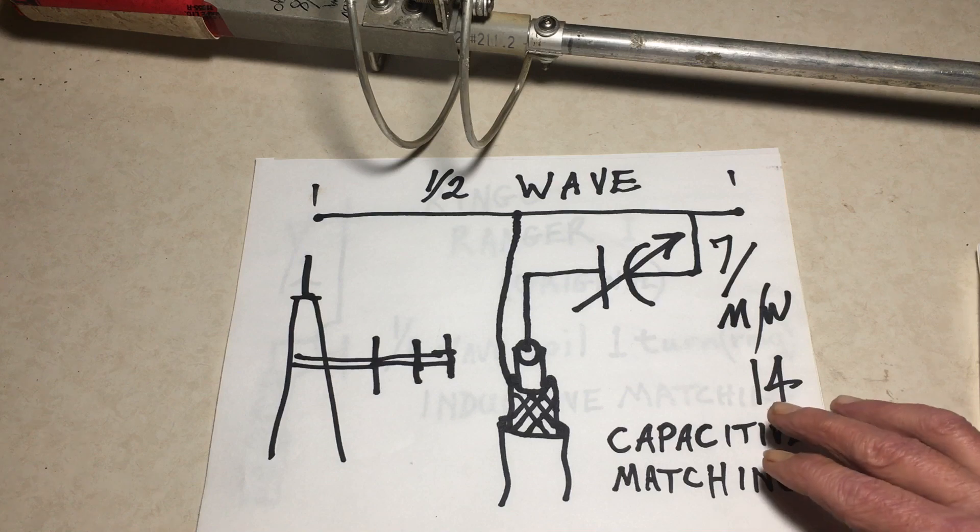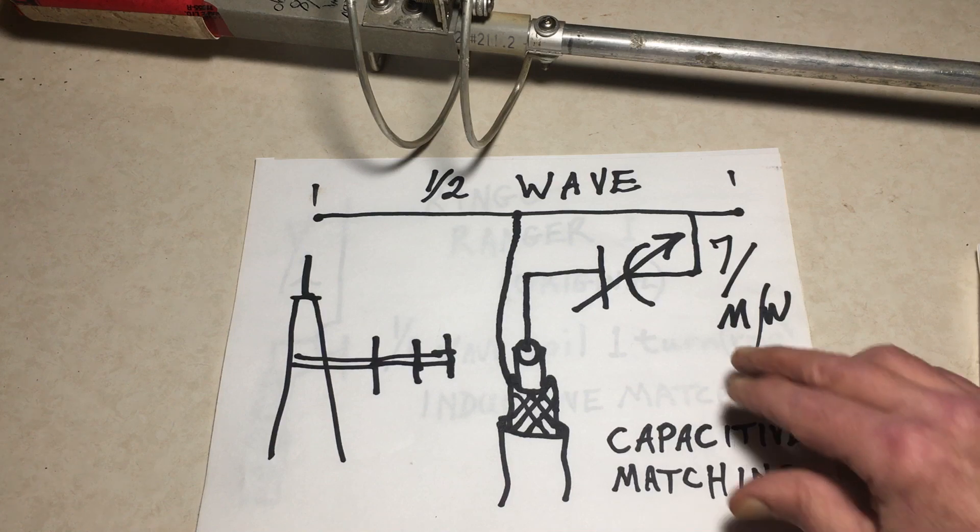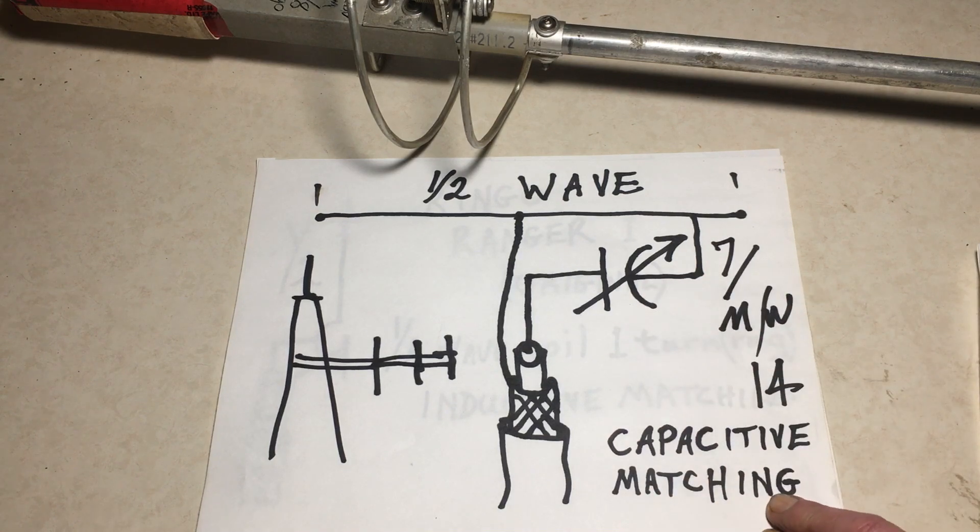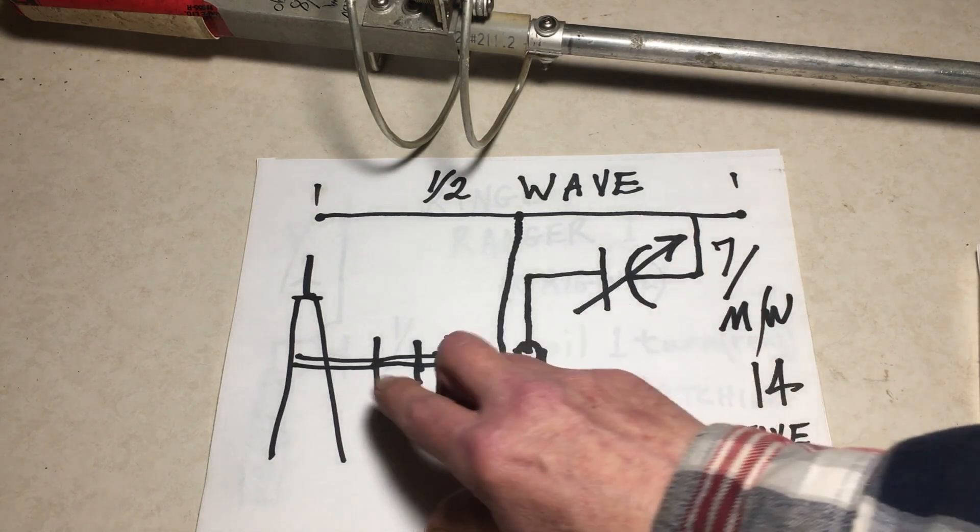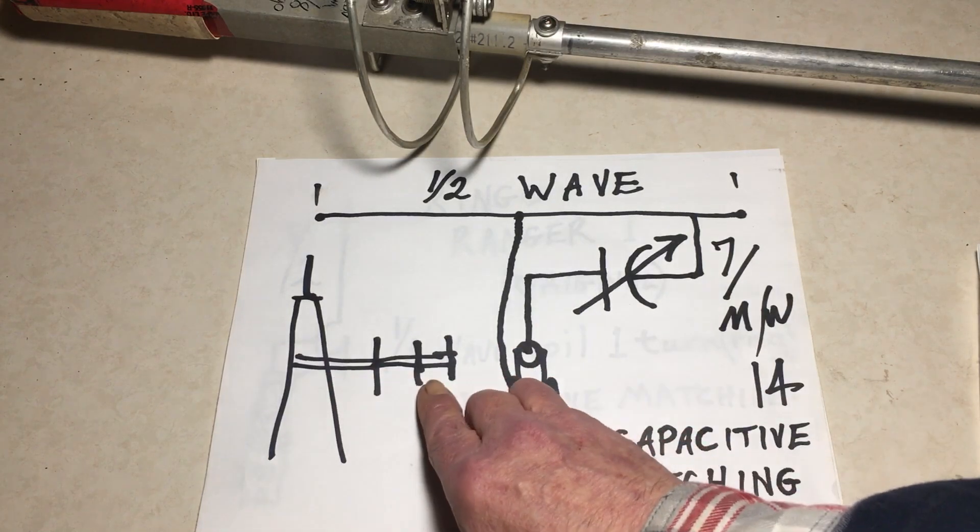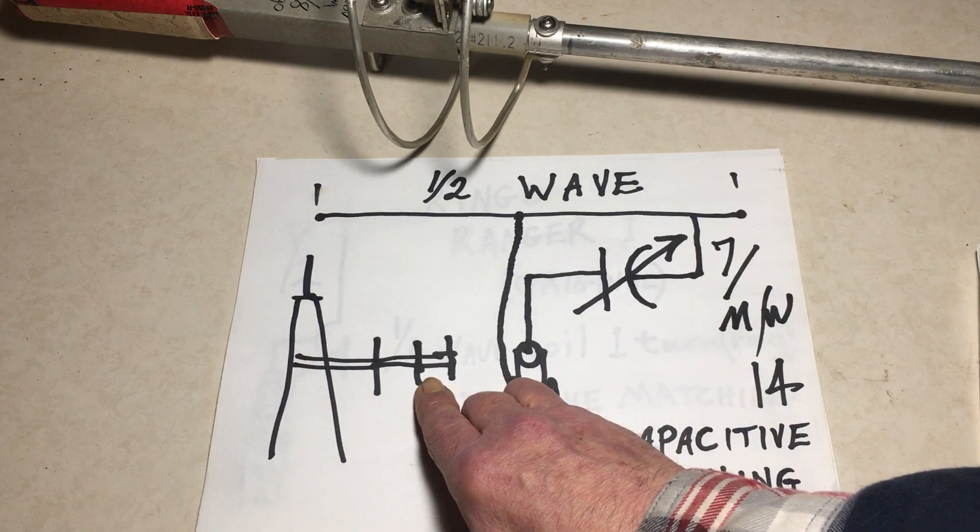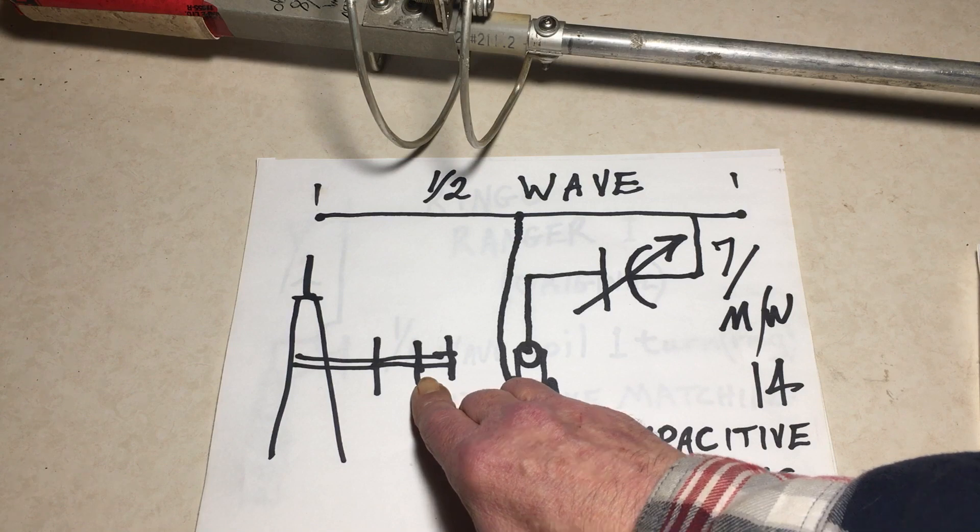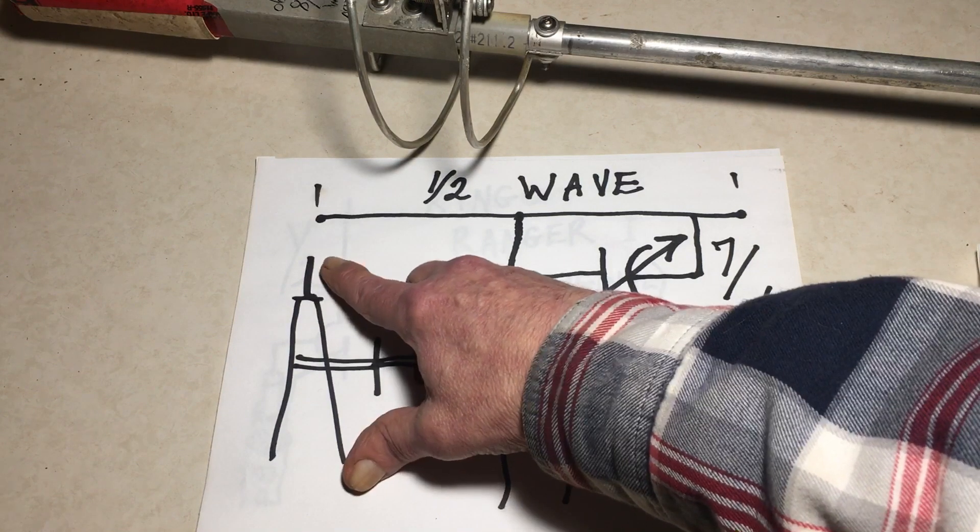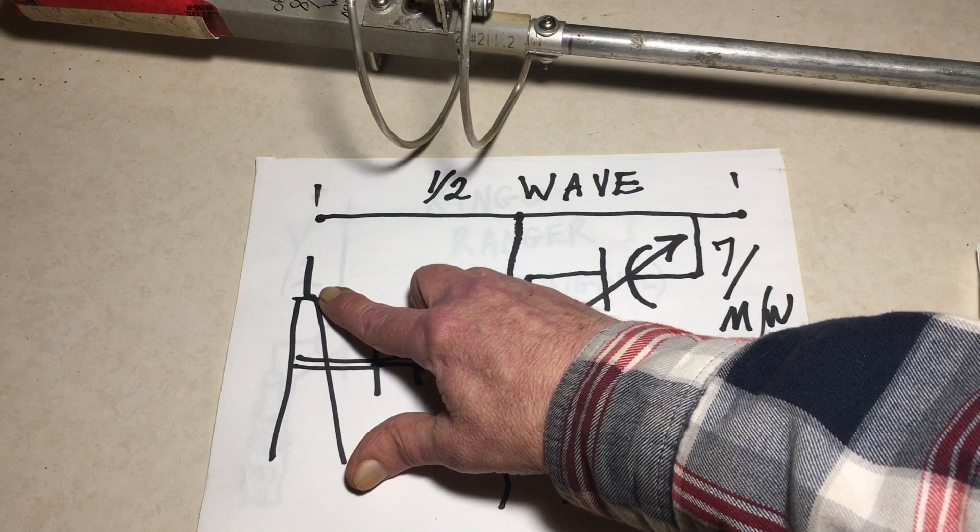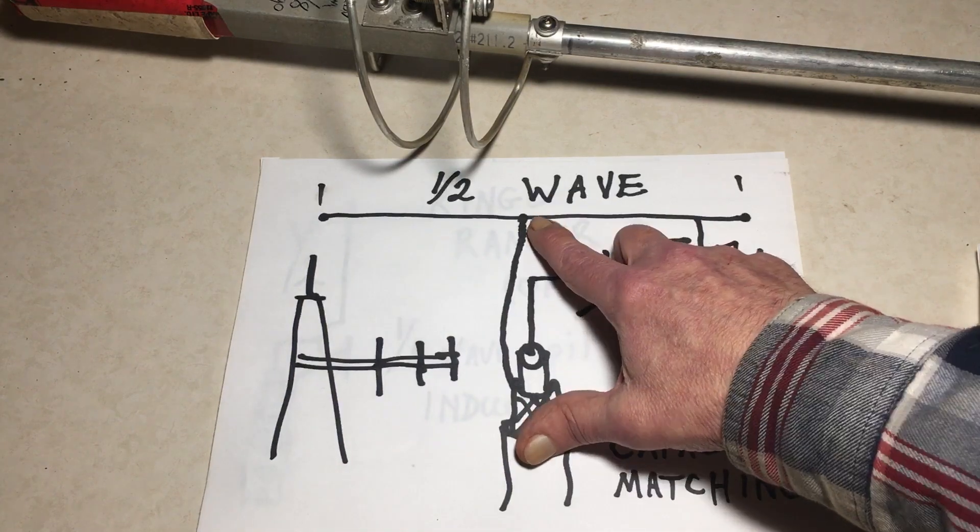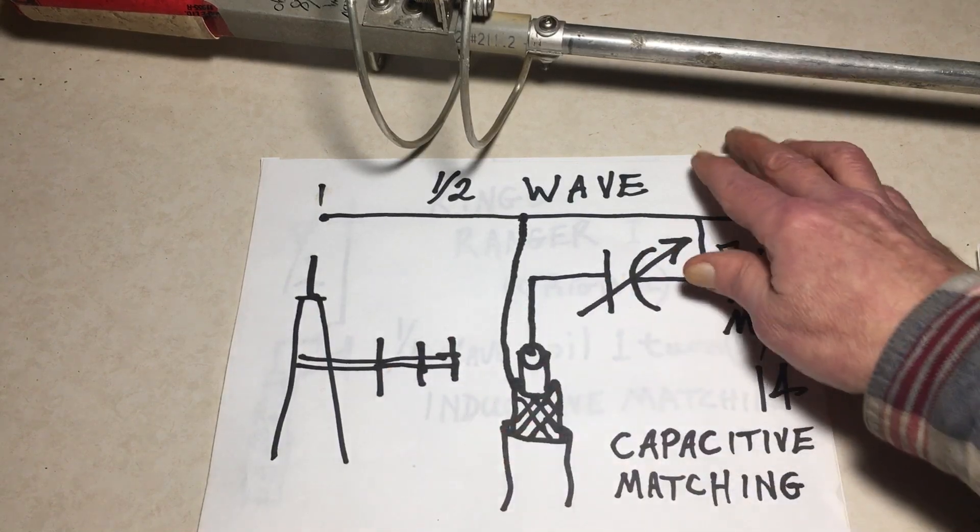In a previous video, we looked at the capacitive matched antenna. This would be known as capacitive matching. This type of antenna would be designed to stick out from the side of a tower. Some people don't have a tower. Maybe they just want to stick it up on a mast or a pole, or even at the top of a tower, such as here. And in that case, we'd probably require something end-mounted.